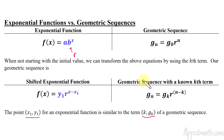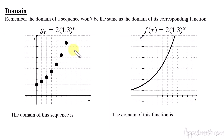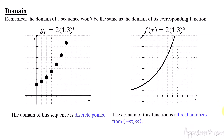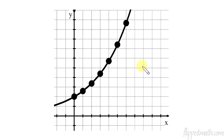Now we have all these similarities, but there is an important difference between the two. If we are looking at the domain, the domain for a sequence is just these distinct dots — these discrete points. Discrete just means individual separated coordinate points. Whereas if we're talking about the entire function, an exponential function would have a domain of all real numbers — from negative infinity to infinity. So if you overlap these, the dots are the sequence but the line includes every single thing in between as well.